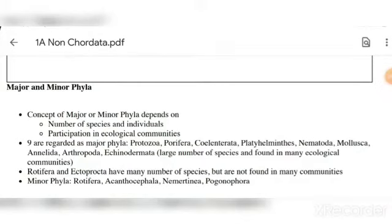Today we are going to start studying minor phyla and major phyla — what is the difference between these two. One thing to remember is that minor phyla and major phyla both come under the invertebrate phyla. Invertebrate animals are animals that don't have vertebrae; they are called non-vertebrate animals.